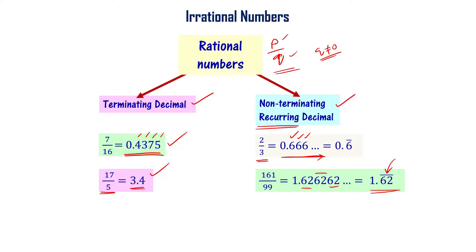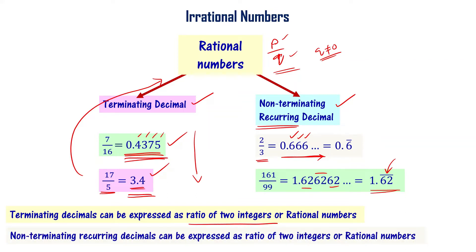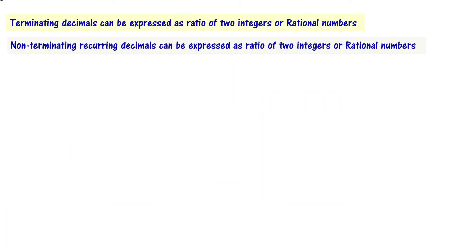So, a terminating decimal can be expressed as the ratio of two integers — for example 3.4 and 0.4375 are rational numbers. Non-terminating but recurring decimals can also be expressed as ratio of two integers — for example 1.62 with overbar and 0.666... have corresponding rational numbers. So both terminating decimals and non-terminating recurring decimals can be expressed as rational numbers.